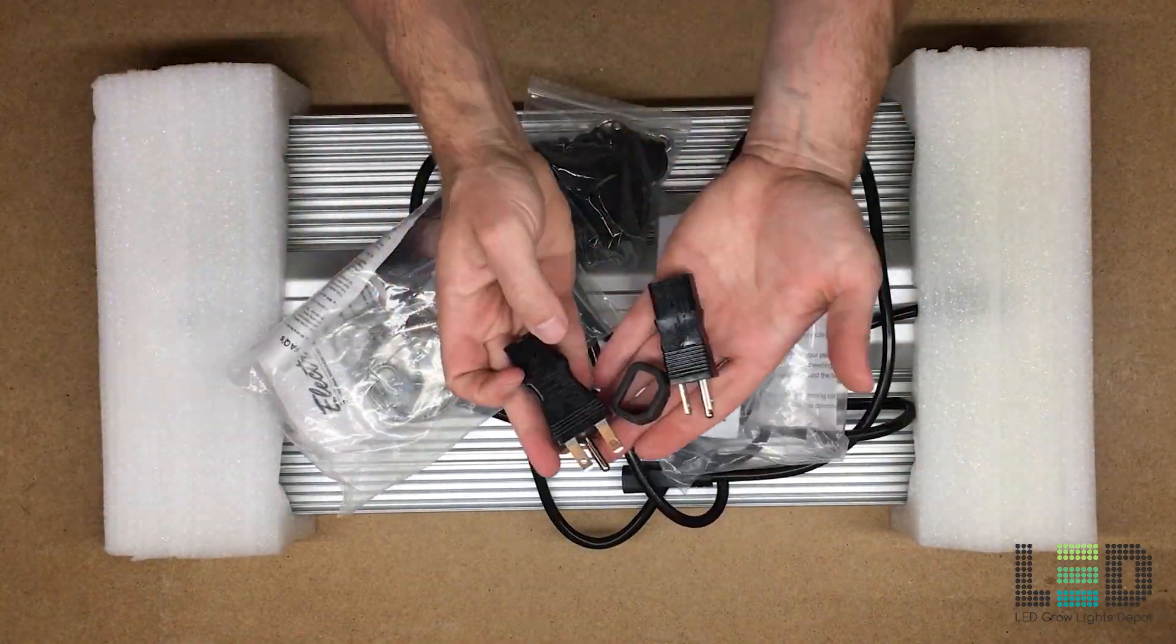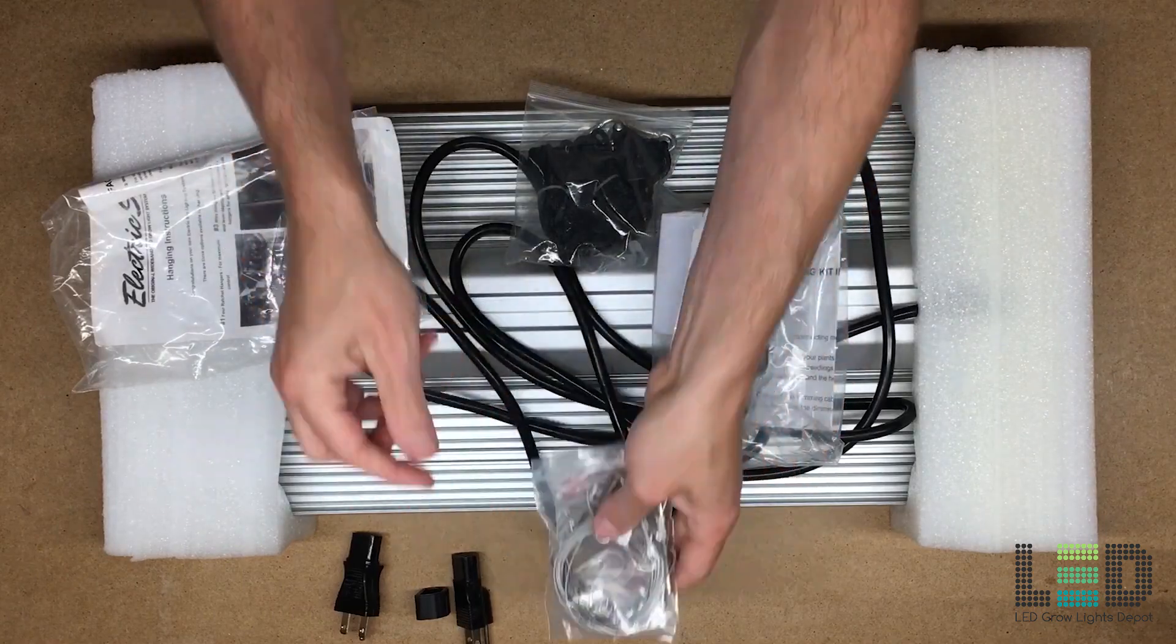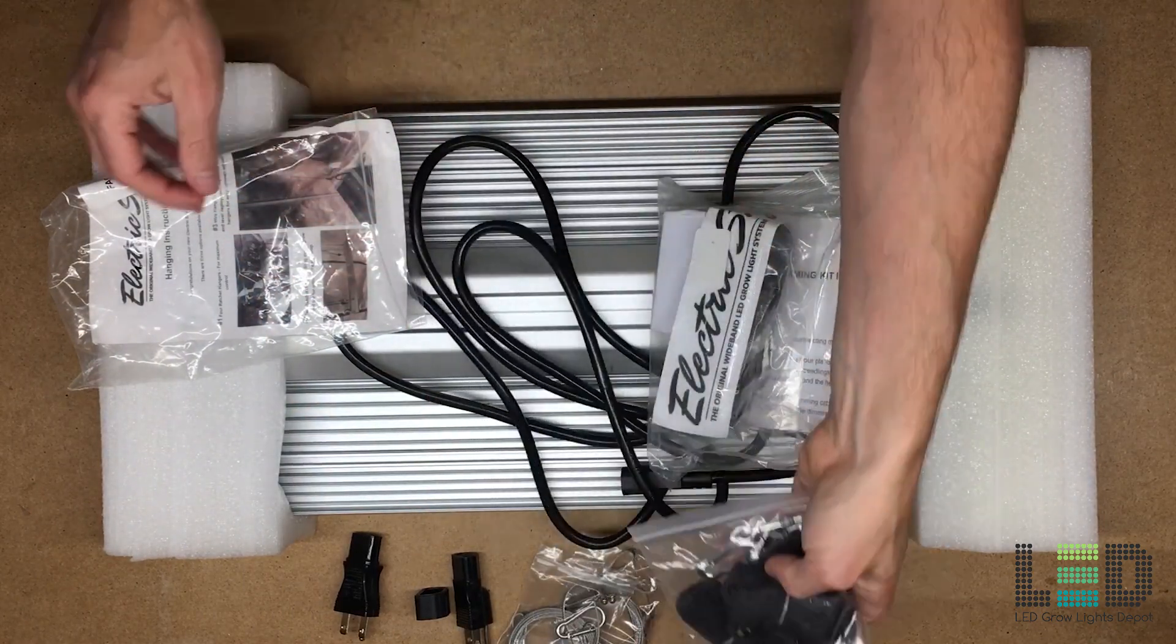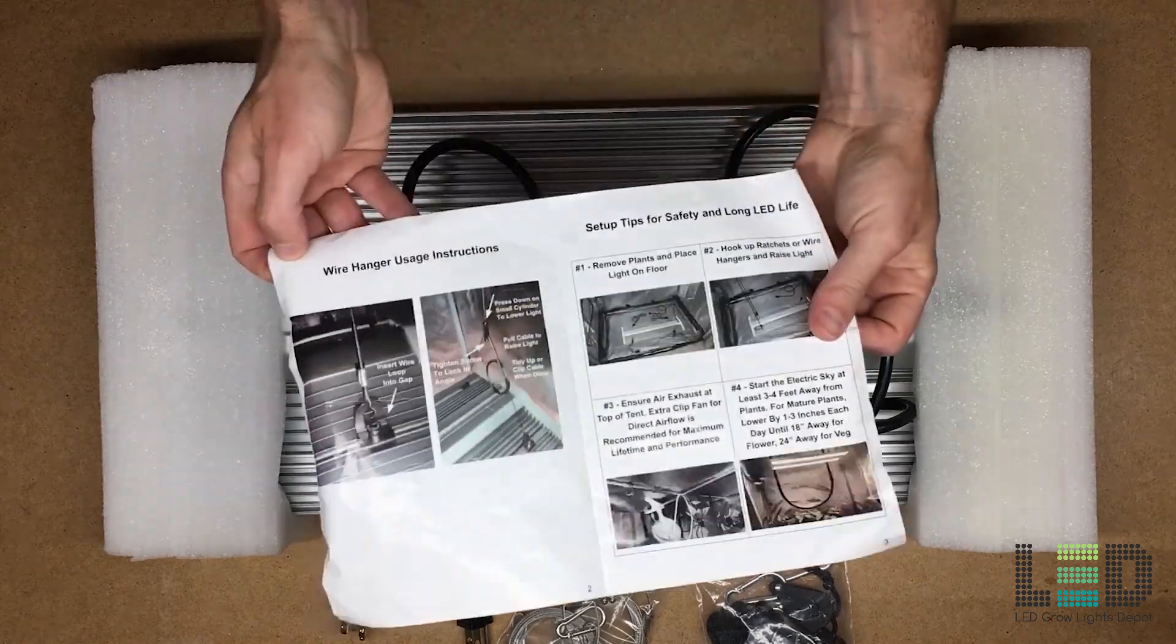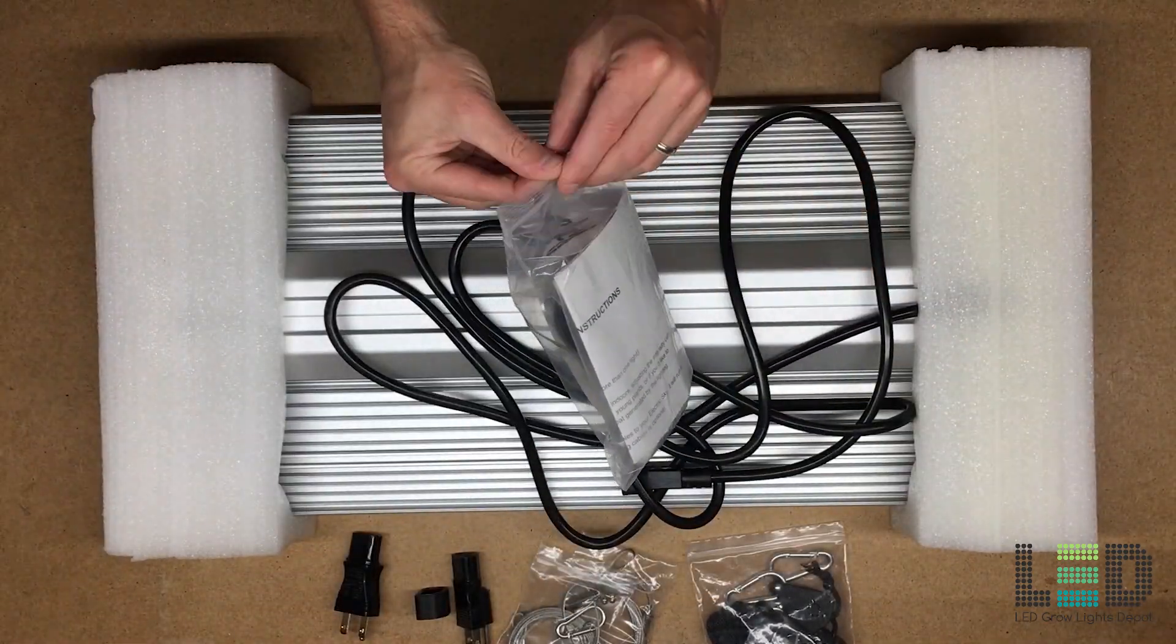All right, let's see what we got. So we got some plugs, we have some wire hangers, and ratchet hangers. Also looks like some basic instructions on setting up the light.